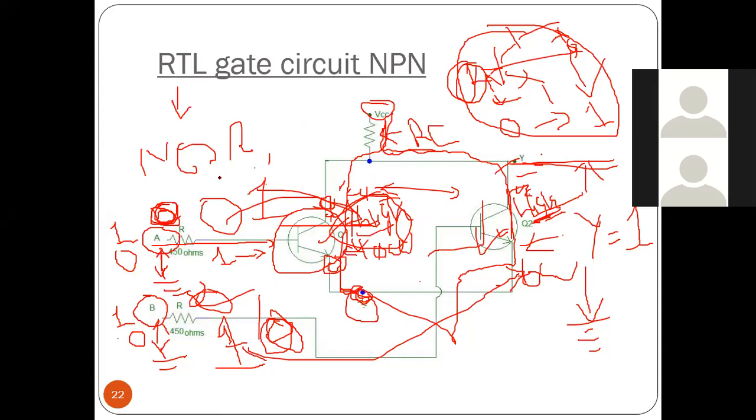So in RTL logic, whenever any of the input is 1, your current will be grounded directly through VCC, through RC, through that transistor and your output will be 0.